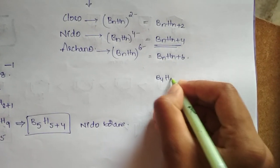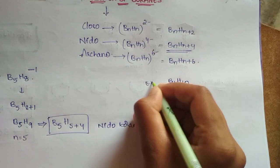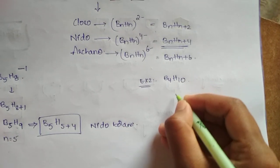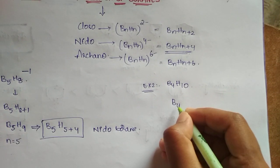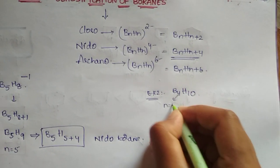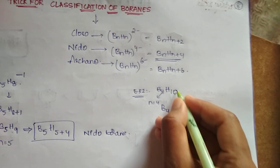If we take another example, B4 H10, here N is equal to 4. So we have to split that 10 into 4 plus some, what? 6.